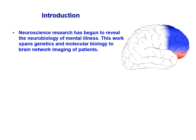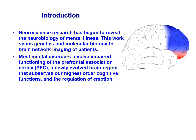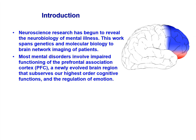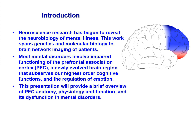Neuroscience research has begun to reveal the neurobiology of mental illness. This work spans genetics to molecular biology to even brain network imaging of patients. Most mental disorders involve impaired functioning of the prefrontal cortex, shown here colored in blue and red. This is a newly evolved brain region that subserves high-order cognitive functions and the regulation of emotion.